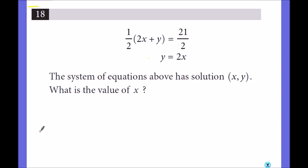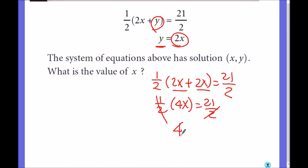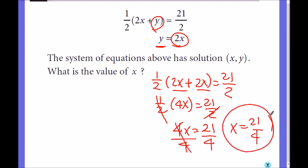The system of equations above has solution x and y, solve for x. This one is easy because you already have a variable solved for y. So substitute 2x for y. So half of 2x plus y, which is 2x, equals 21 over 2. So I get half of 2x is x plus 2x is 3x equals 21 over 2. So multiply by 2 on both sides to get rid of the denominators. So I get 6x equals 21. So divide by 6 from both sides. Wait, x plus 2x is 3x, no, half of 2x is x, plus 2x is 3x. 3x times 2 is 6x. No wait, let me redo this. 4x equals 21. So x equals 21 over 4. You can just write it as a fraction, 21 over 4.